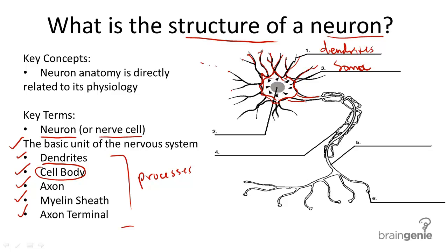Next, when an action potential is reached, which we'll be discussing in another video, the nerve cell transmits and sends an electrochemical signal down this long extension here called an axon.